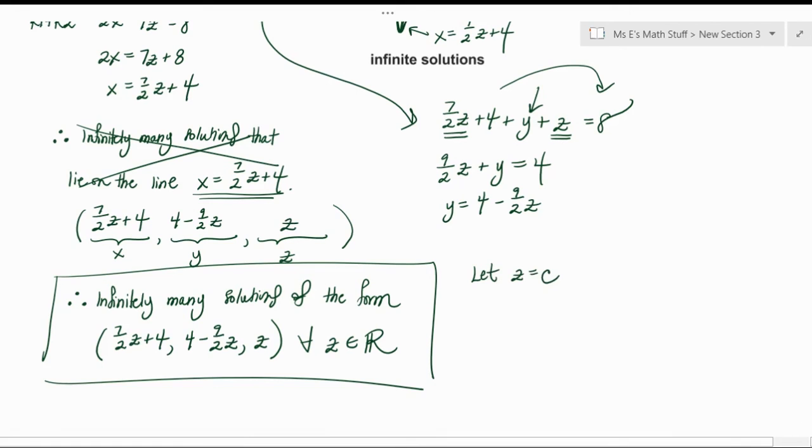So in this case they would like let z equals c or something, some letter that's somewhat independent of x, y, or z. And then they would seriously write this exact formula but they would write 7/2 c plus 4, 4 minus 9/2 c, and c for all c from the real number system. So it's the exact same thing that I'm writing, they just introduce this kind of like free variable or independent variable.